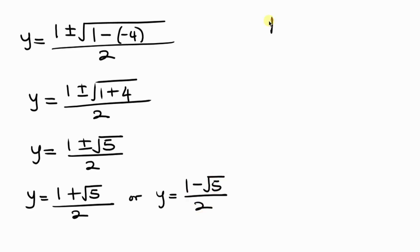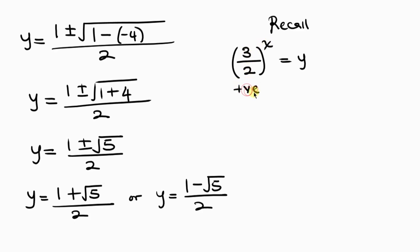Recall from our substitution that 3 over 2 raised to the x equals y. Now 3 over 2 is always positive no matter the power we raise it to, so the left-hand side is always positive. The first case gives a positive y, while the second gives a negative y. We therefore reject the negative y and keep the positive one, since both sides must be positive.